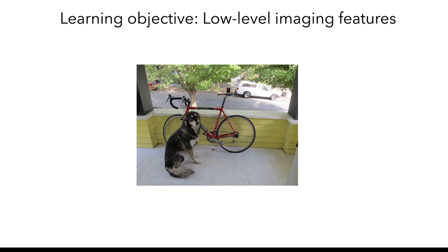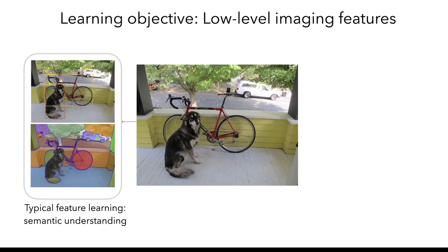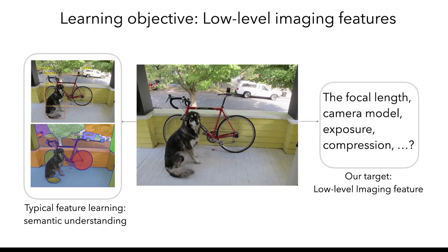Typically, the goal of training multimodal representation is to learn about high-level concepts, such as the objects and scenes. But often, it is just as important to know those low-level imaging properties, such as the type of camera that shoots the photo, its lens, and exposure.